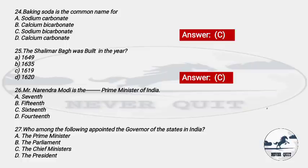Question 26: Narendra Modi is the dash Prime Minister of India — Options: A) 7th, B) 15th, C) 16th, D) 14th. The right answer is option D — Narendra Modi is the 14th Prime Minister of India.